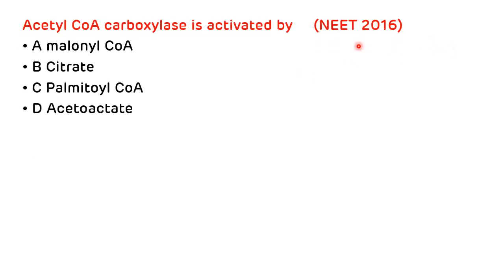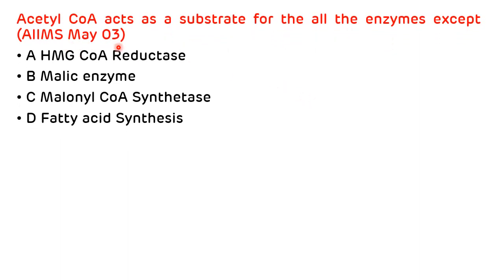MCQ 3 (NEET 2016): Acetyl-CoA carboxylase is activated by: a) malonyl-CoA, b) citrate, c) palmitoyl-CoA, d) acetoacetate. Answer: b) citrate — citrate allosterically activates acetyl-CoA carboxylase. MCQ 4 (AIIMS May 2003): Acetyl-CoA acts as a substrate for all enzymes except: a) HMG-CoA reductase, b) malic enzyme, c) malonyl-CoA synthetase, d) fatty acid synthase. Answer: b) malic enzyme — in the malic enzyme reaction, the substrate is malate, which is converted to pyruvate by oxidative decarboxylation.